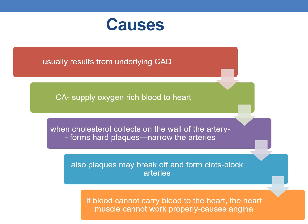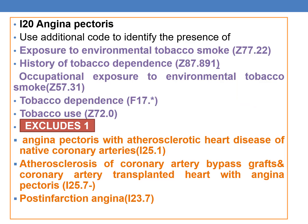Angina usually occurs due to underlying coronary artery disease. Codes for angina pectoris come under subcategory I20. Whenever coding angina pectoris, in the tabular list you will find an instruction to use additional codes to identify the presence of: exposure to environmental tobacco smoke (Z77.22), history of tobacco dependence (Z87.891), and occupational exposure to environmental tobacco smoke (Z57.31).